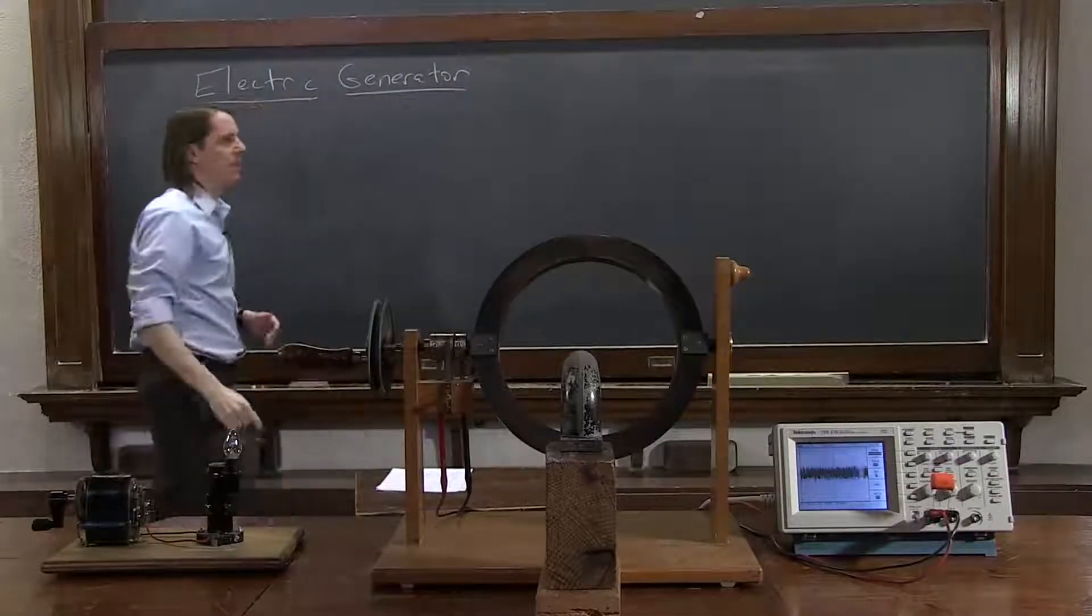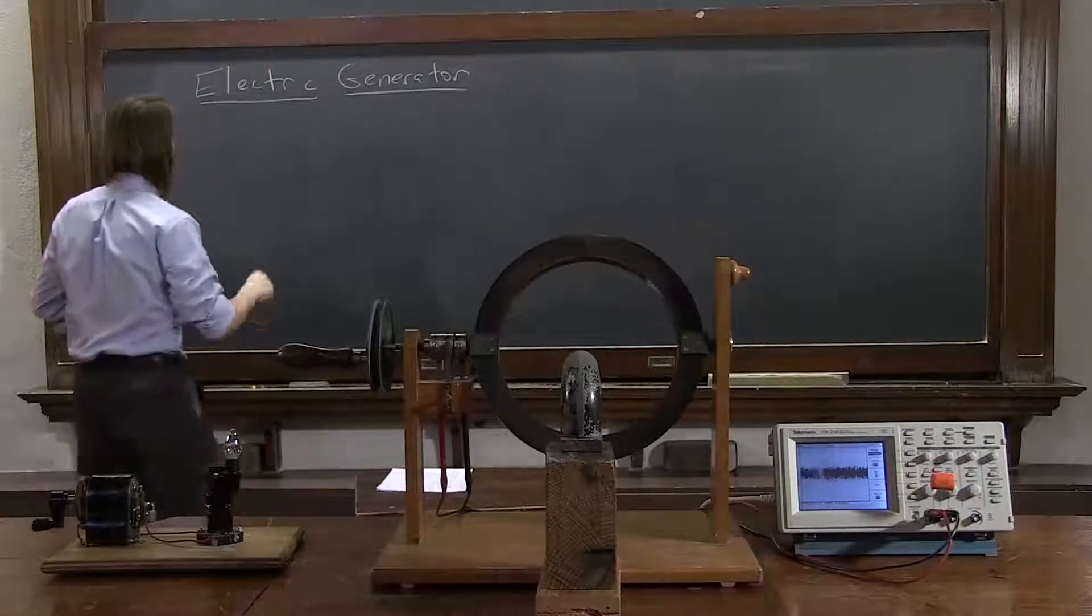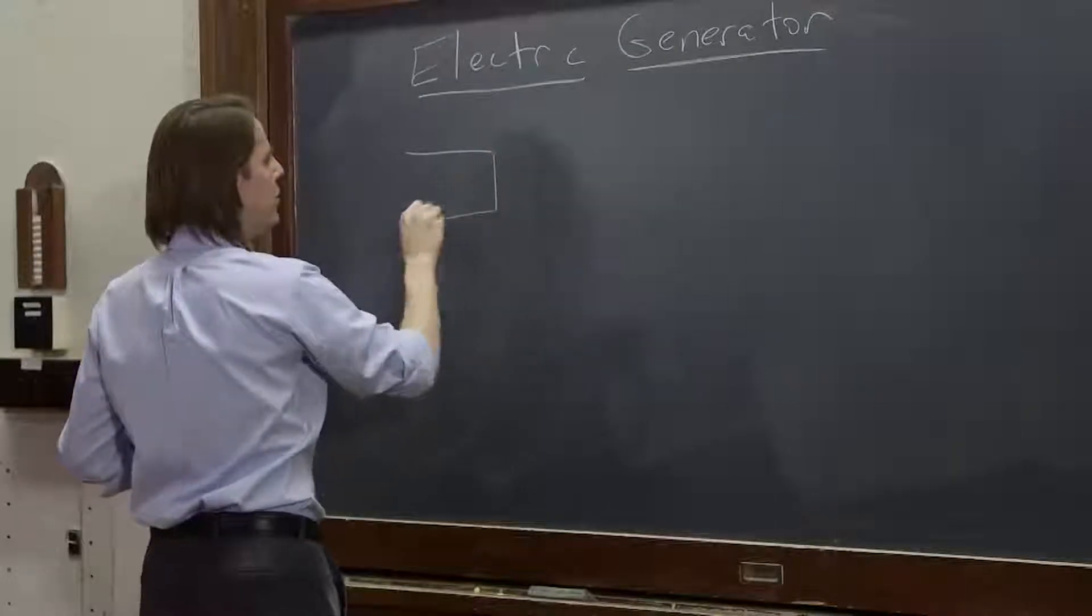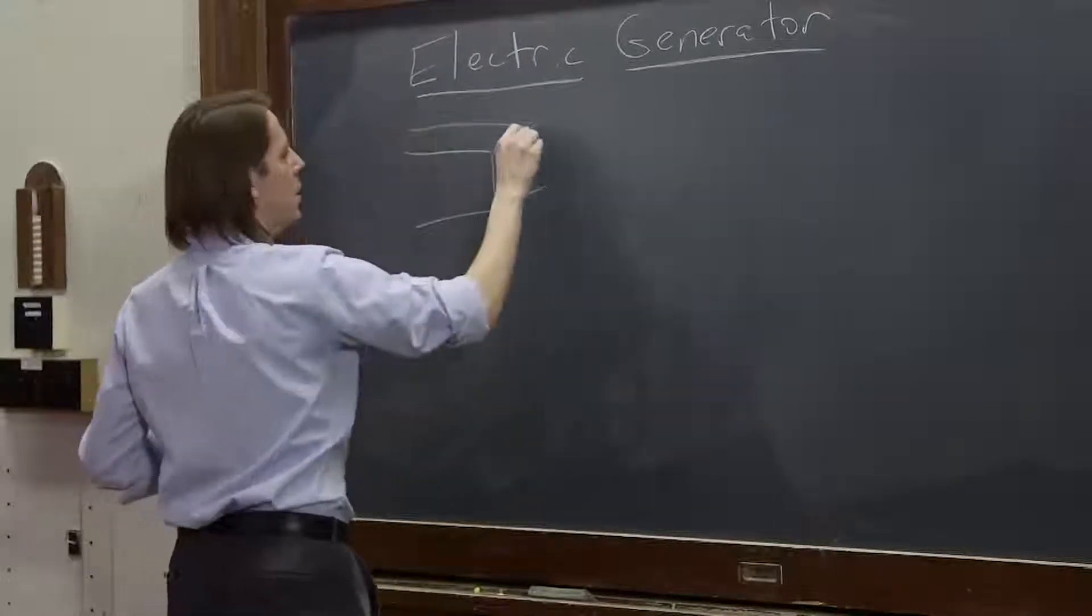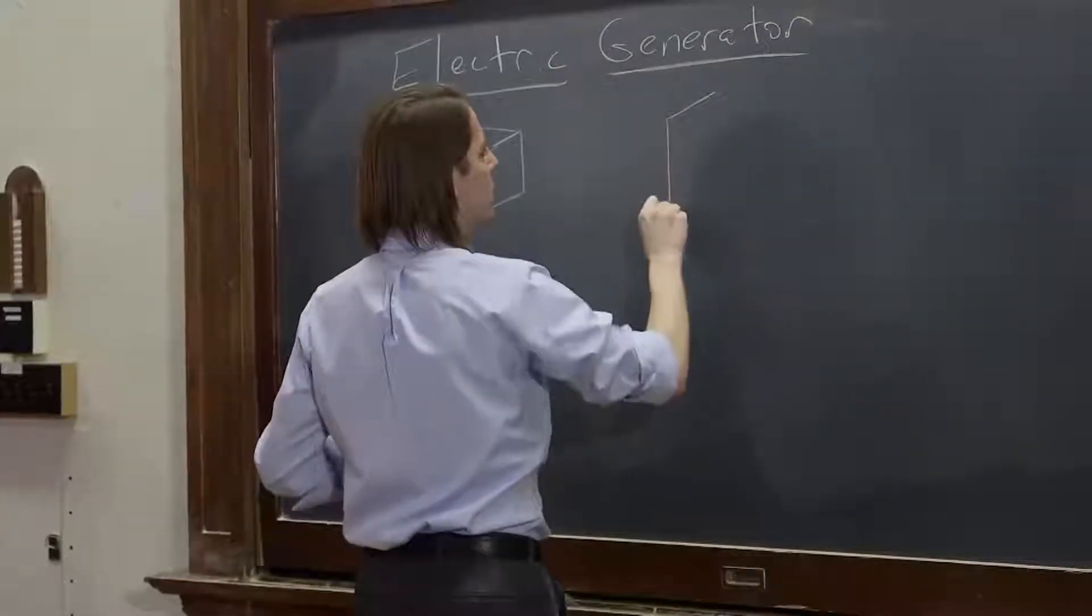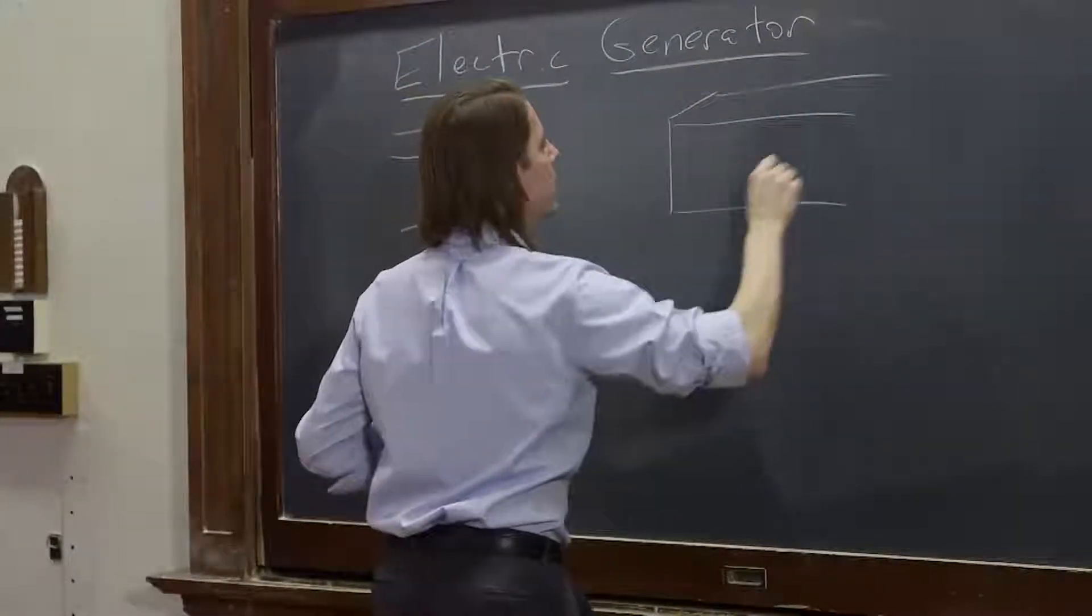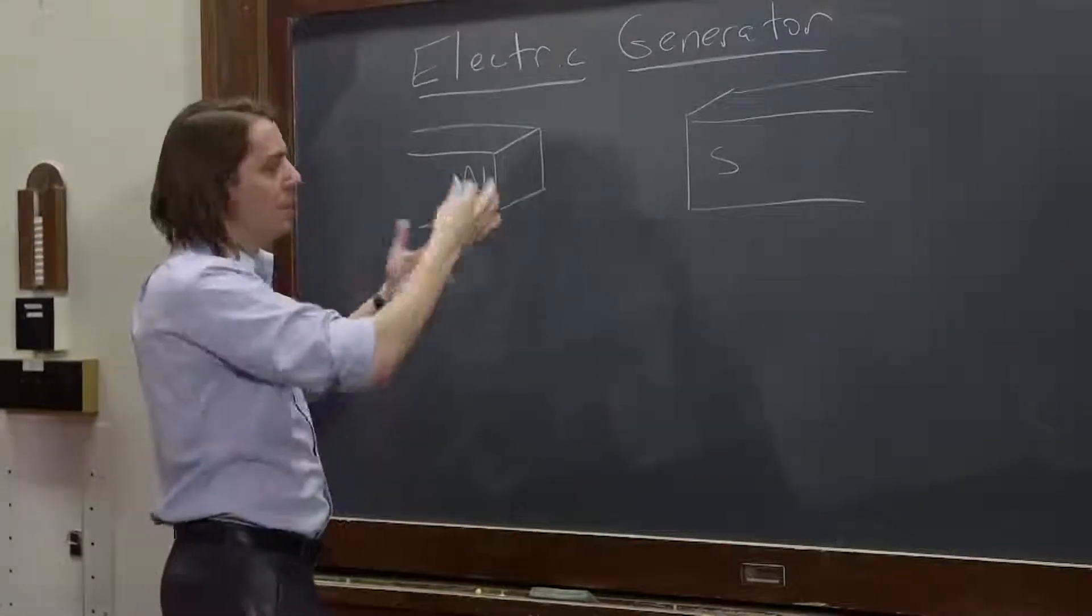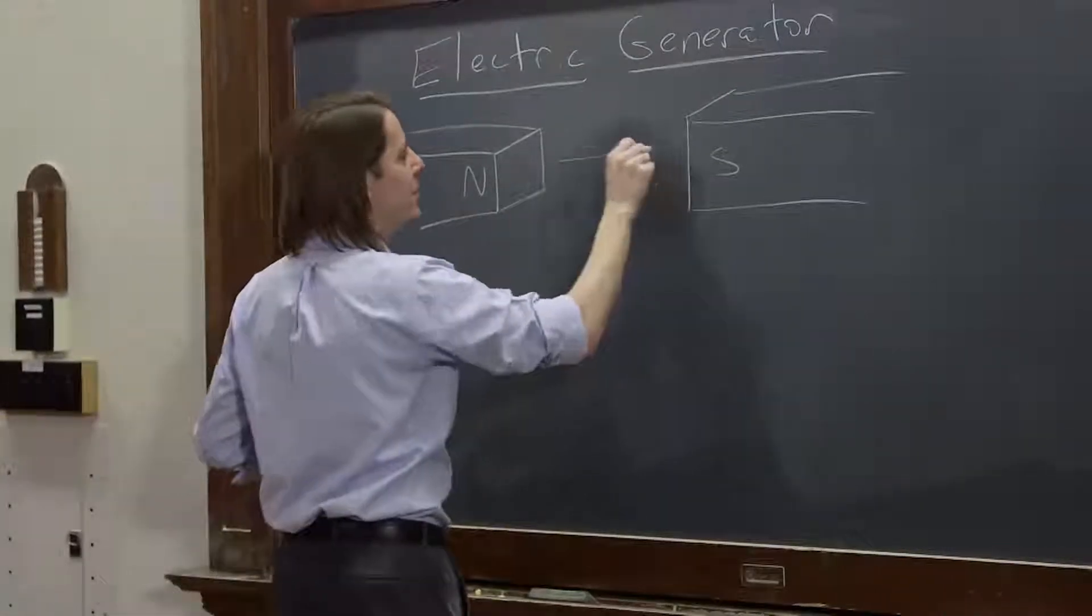There are many kinds of amazingly complicated electric generators. We're going to imagine the simplest one. So here are the poles of a magnet. They're sitting there just to give us a uniform, well it wouldn't be perfectly uniform, but some magnetic field in between B.